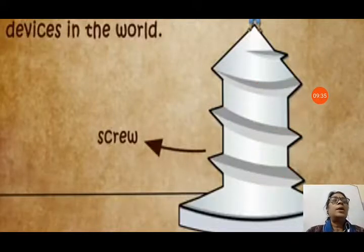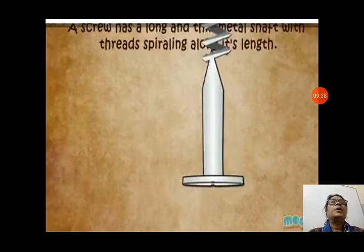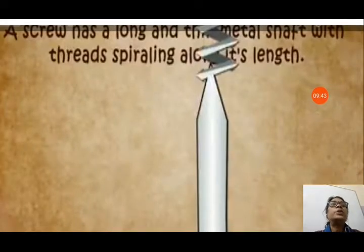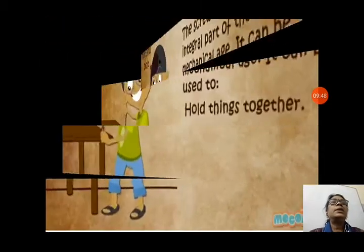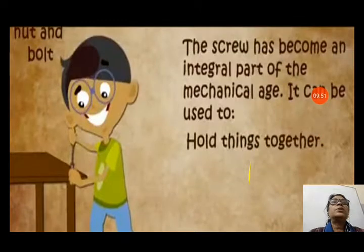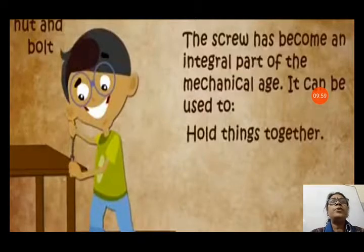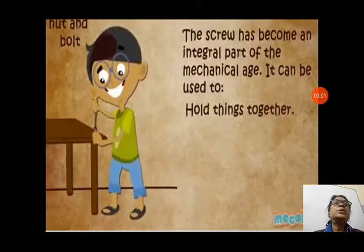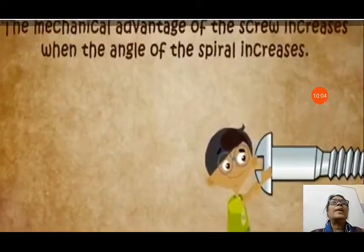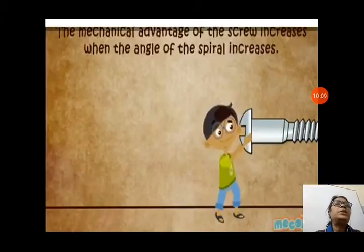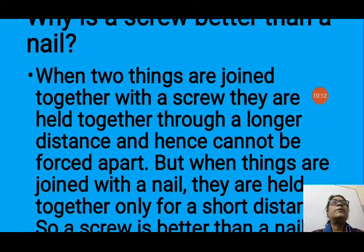A screw has a long thin shaft with threads spiraling along its entire length. It is one of the most commonly used mechanical devices in the world and can be used to hold things together. The mechanical advantage of a screw increases when the angle of the spiral increases.